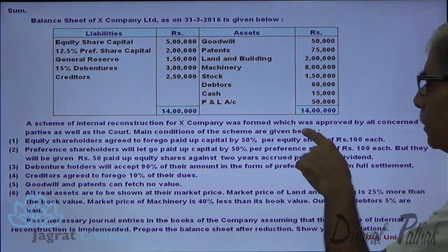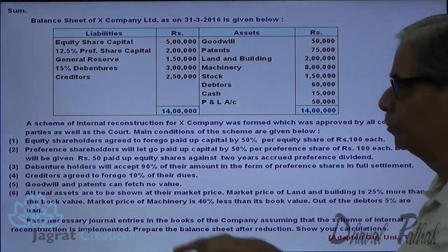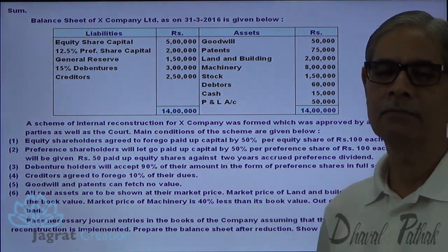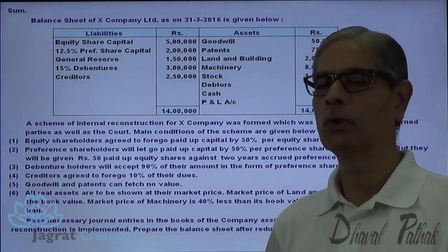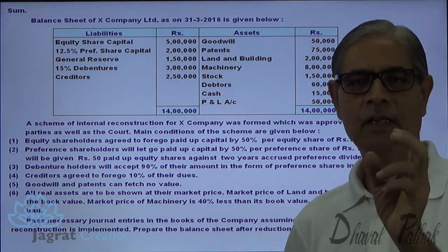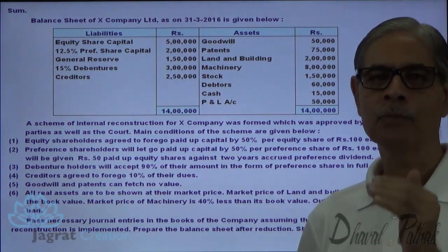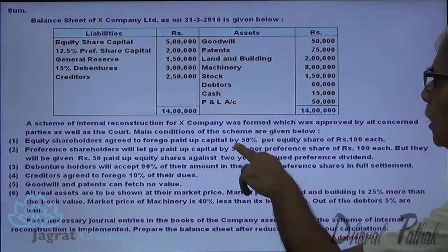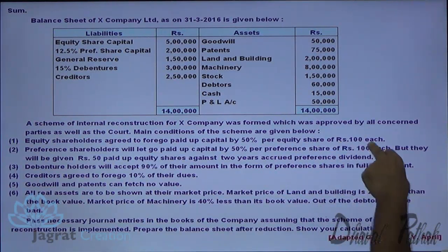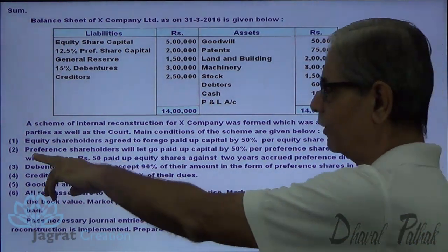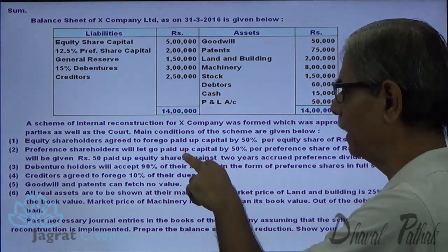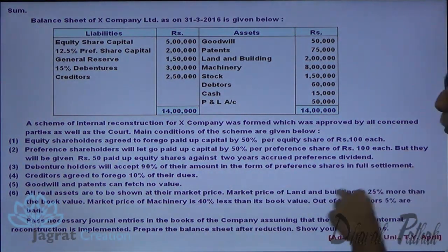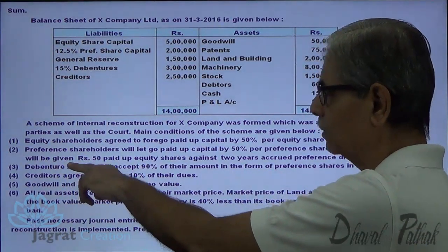The main conditions of the scheme are as follows. Equity shareholders agreed to forego paid-up capital — the face value remains the same but the paid-up value declines — by 50% of the equity shares of Rs. 100 each. Preference shareholders will let go paid-up capital by 50% of the preference shares of Rs. 100 each, but they will be given Rs. 50 paid-up equity shares against 2 years' accrued preference share dividend.